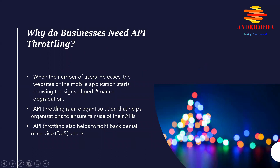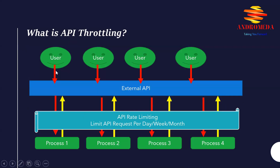API throttling is an elegant solution that helps organizations ensure fair use of their APIs. When lots of users are calling enormous numbers of API calls causing performance degradation, API throttling ensures that the volume of calls will be utilized evenly across all users, so that the user experience will be similar for all users without any performance degradation.